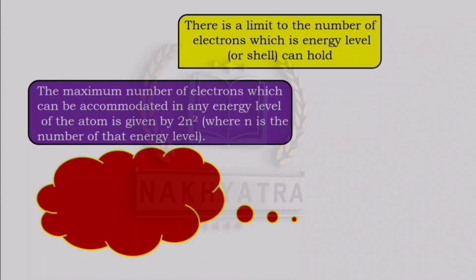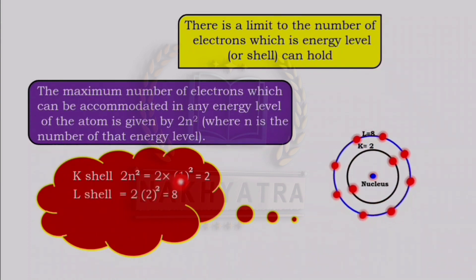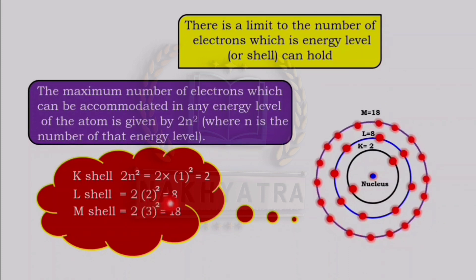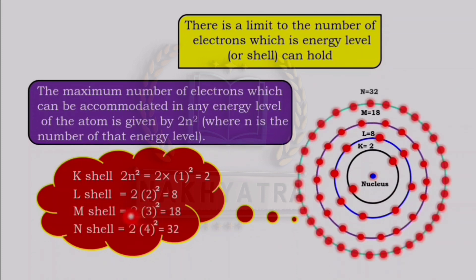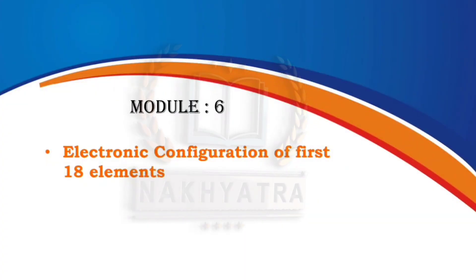For the K shell (first shell), n = 1, so 2 × 1² = 2. For the L shell, n = 2, so 2 × 2² = 8. For the M shell, n = 3, so 2 × 3² = 18. For the N shell, n = 4, so 2 × 4² = 32. So the maximum electrons in K, L, M, N shells are 2, 8, 18, and 32 respectively. Now we will see the electronic configuration of the first 18 elements.